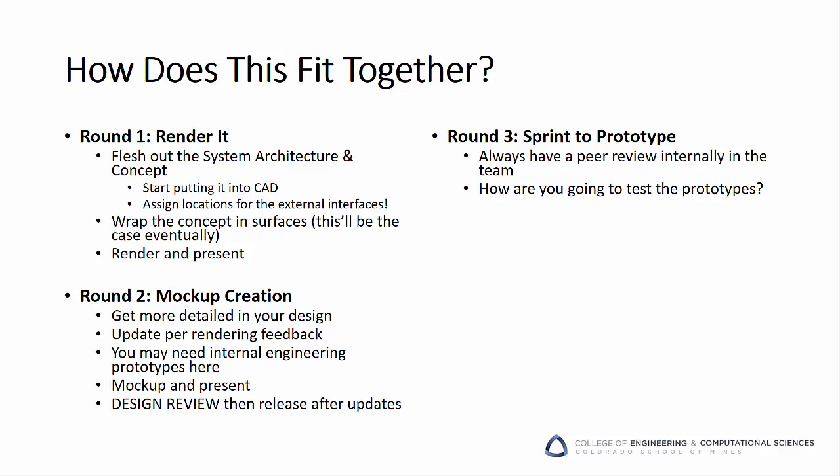In round one, you render it. Flesh out the system architecture and concept. Start putting some of your ideas into CAD and assign locations to the external interfaces. You can begin wrapping the concept in surfaces, rendering it and presenting it to the client to get fast feedback. Round two is mock-up creation. You're getting more detailed in your design at this point, and you've updated your design based on feedback on your renderings. You may be making internal engineering prototypes in the background, but you're using mock-ups to present your ideas to the client. Design reviews are a great time to show them your latest thoughts using mock-ups.